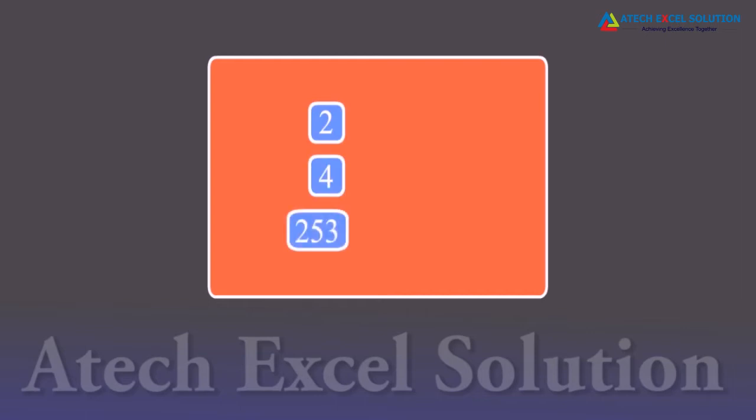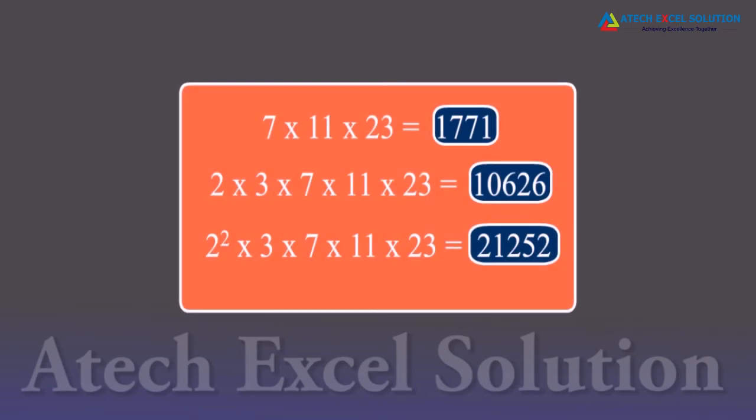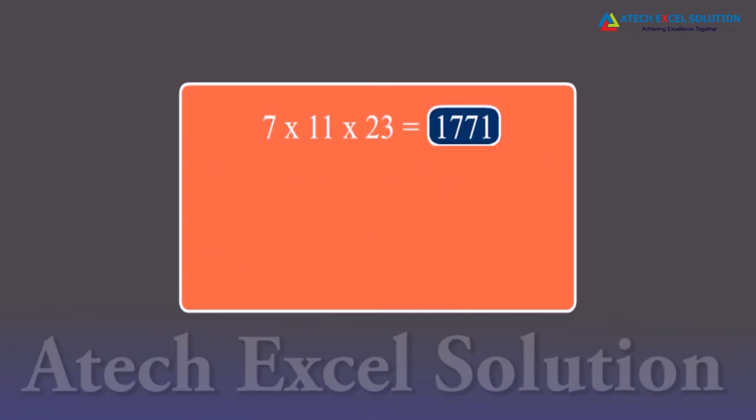We can write these numbers as products of their prime factors. Let's look at some large numbers like 1771, 10626, and 21252. From these examples, we can say that if we multiply some prime numbers like 2, 3, 7, 11, and 23, we can produce a large collection of positive integers.